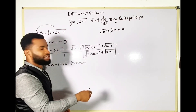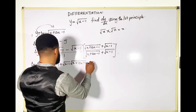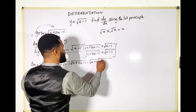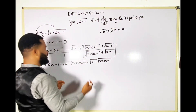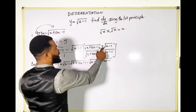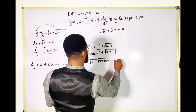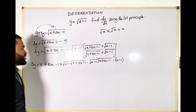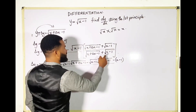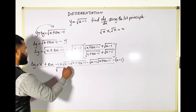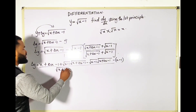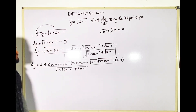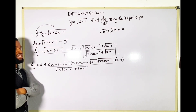Then I apply this term to the other: minus root (x − 1) times root (x + Δx − 1), and then minus root (x − 1) times root (x − 1), which gives minus (x − 1). All of this is over root (x + Δx − 1) plus root (x − 1).